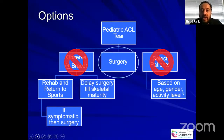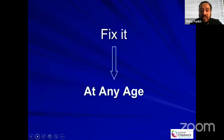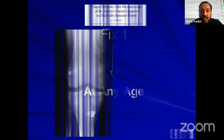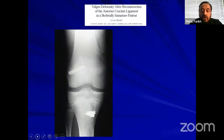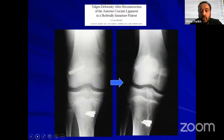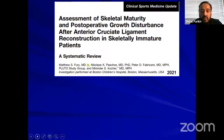In short, what you're left with is the option of fixing it. I would fix it at any age. Whenever the child presents, we have done ACL reconstruction in kids who are five years of age all the way through the adolescent age group. There are issues we need to be aware of to prevent complications. Here is a case report of a valgus deformity after ACL — you can see an implant going across the physis, so obviously we don't want to do that.